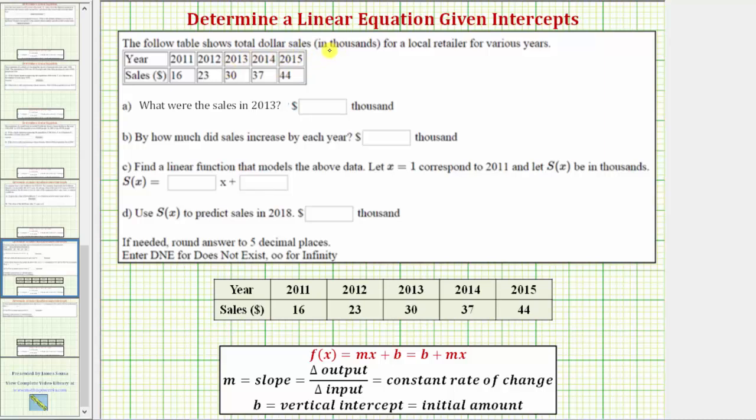The following table shows total dollar sales in thousands of dollars for a local retailer for various years. I've also copied the table here below to make it easier to see.